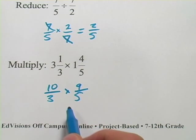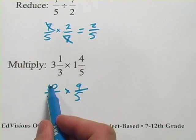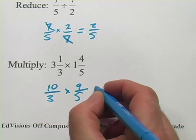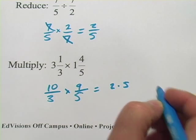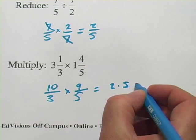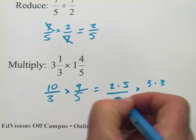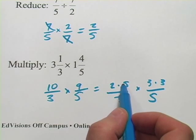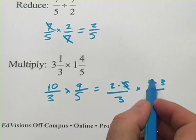Now, it might seem to you that we don't have anything we can cancel, but we do. I'm going to write the 10 in a prime factorization. 10 is 2 times 5. So this is 2 times 5. And then I'm going to write the 9 here as 3 times 3. Now, we have things we can cancel. I've got a 5 on top and a 5 on the bottom. Those are gone. I've got a 3 on top and a 3 on the bottom. Those are gone.